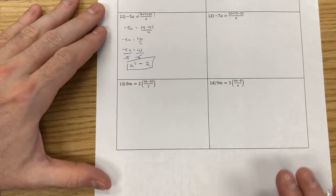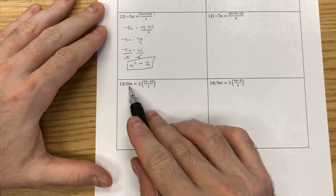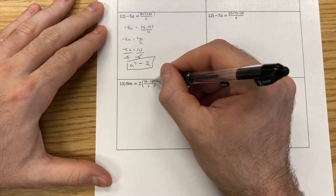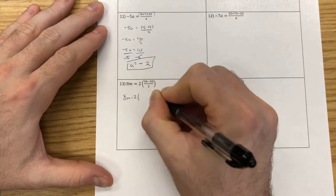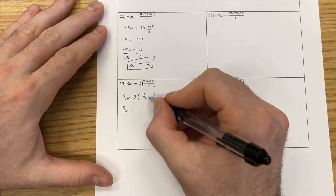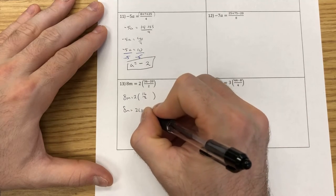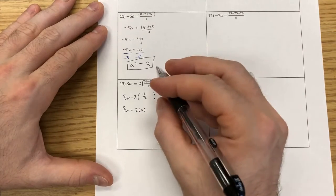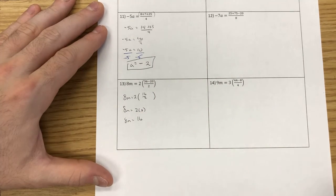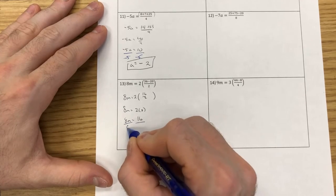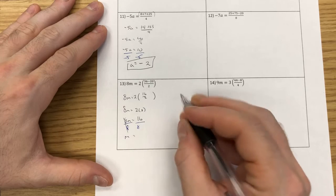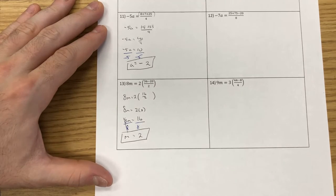Last but not least, I do the same thing down here. The variable is only on one side, so I clean up everything on the right-hand side. Following the fraction, I do what's in the top first: 36 minus 20 is 16. Then what's inside the parentheses: 16 divided by 2 is 8. Then 8m equals 2 times 8, which is 16. The last step: since 8 is connected via multiplication, undo it with division. 8 divided by 8 cancels, and 16 divided by 8 is 2. So m equals 2.